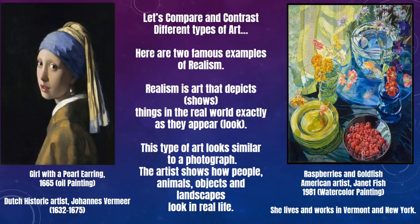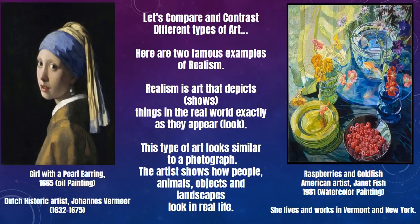Now let's think about how they're different — let's look at the contrast. You might have said that one of them is an oil painting and the other is watercolor. You might have said that there's a very dark background behind the Girl with a Pearl Earring, and on the right you're noticing a lot of light and reflection. You might notice there's no goldfish, flowers, or raspberries with the Girl with a Pearl Earring, and there's no girl in the painting with the raspberries and goldfish.